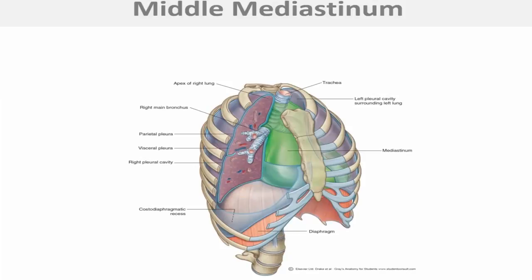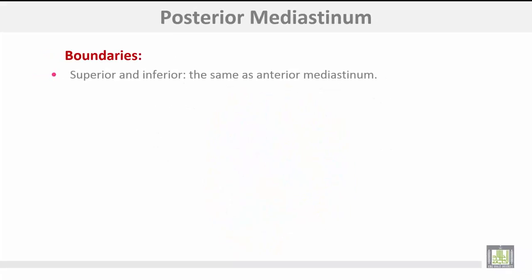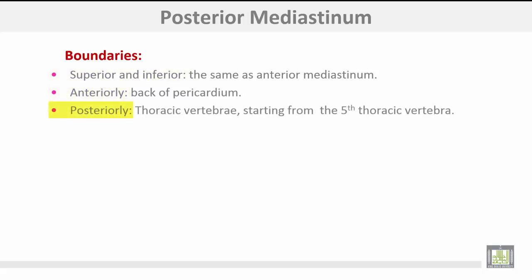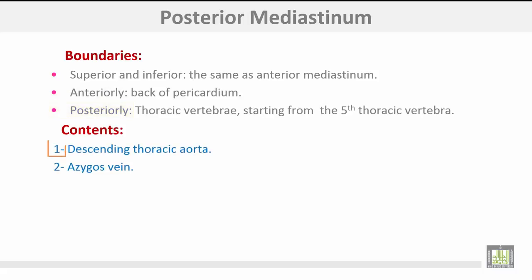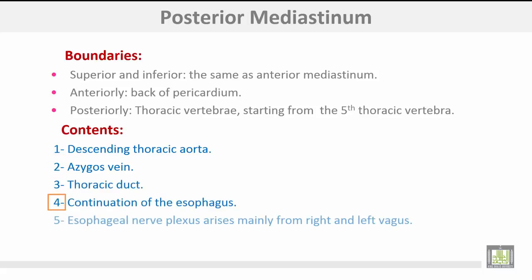A diagram shows the middle mediastinum occupied by the heart and pericardium. The posterior mediastinum has the same superior and inferior boundaries as the anterior mediastinum, but anteriorly it is bounded by the back of the pericardium and posteriorly by the thoracic vertebrae starting from the fifth thoracic vertebra. The contents of the posterior mediastinum include the descending thoracic aorta, azygos vein, thoracic duct, the continuation of the esophagus, and the esophageal nerve plexus arising mainly from the right and left vagus nerves.